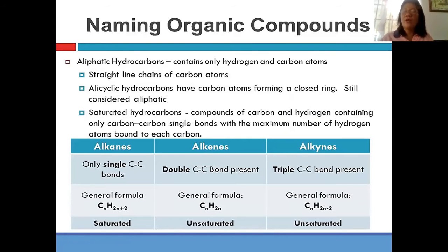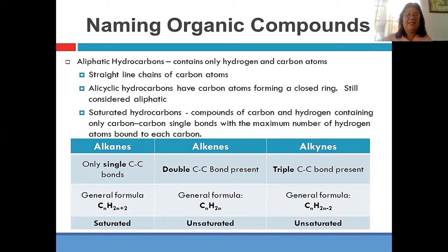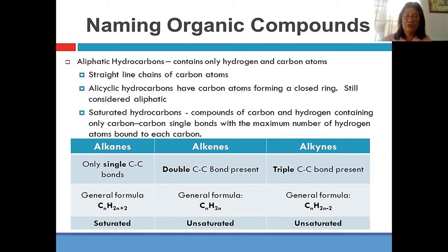In the naming of organic compounds — this is just a review. If you talk about hydrocarbons, there are four types of hydrocarbons. That is the alkanes, which ends with A-N-E-S. The alkanes have a single bond and have a general formula of CₙH₂ₙ₊₂. Then the alkenes have a double bond, ending with E-N-E-S, and a general formula of CₙH₂ₙ. Then the triple bond — the alkynes — wherein the formula is CₙH₂ₙ₋₂.